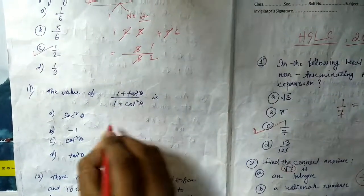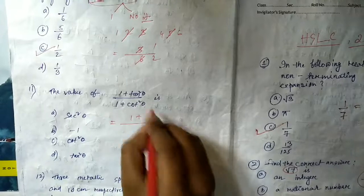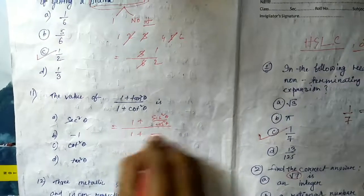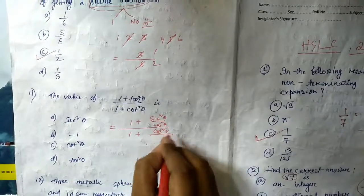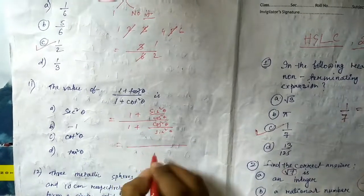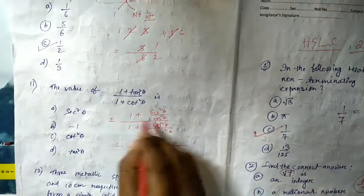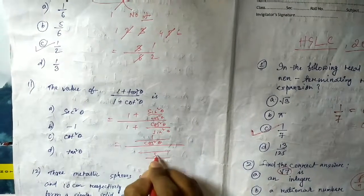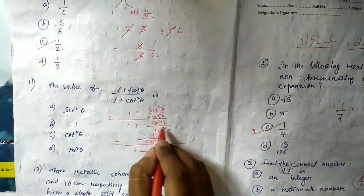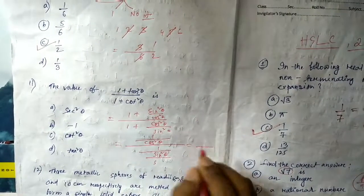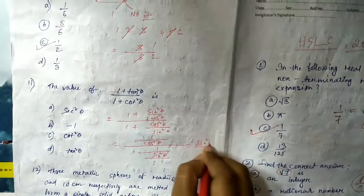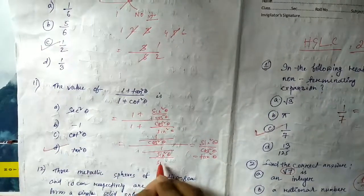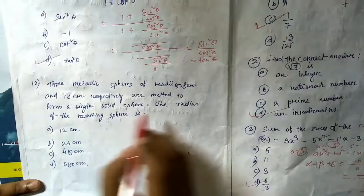Question number eleven: simplify the trigonometric expression. Converting: tan²θ = sin²θ/cos²θ and cot²θ = cos²θ/sin²θ. Taking LCM: (1 + tan²θ) gives cos²θ in denominator, with cos²θ + sin²θ = 1 in numerator. Similarly (1 + cot²θ) gives sin²θ in denominator. After simplification, the result is sin²θ/cos²θ = tan²θ.